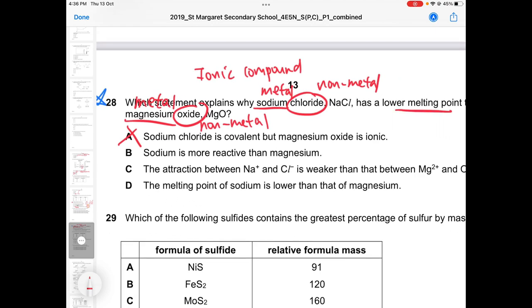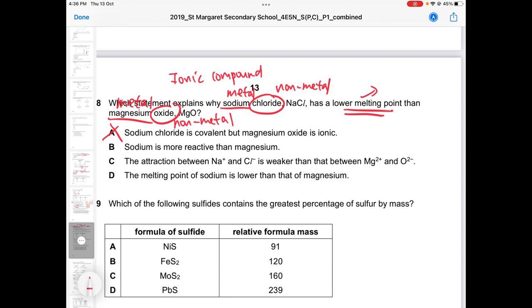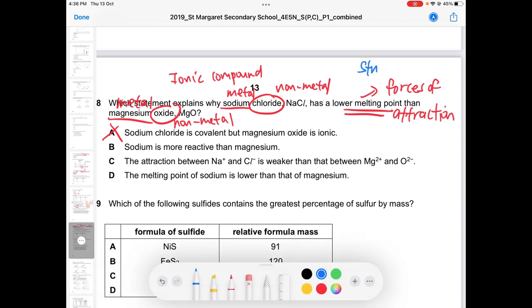Now melting point is always about the forces of attraction. Since they are both ionic compound, we are looking at strong electrostatic forces of attraction. It is not about which metal is more reactive. We are looking at the forces of attraction. So 2 plus and 2 minus definitely is stronger compared to just plus and minus. That's why answer is C.